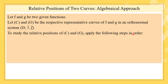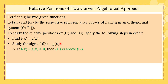First, we find F minus G of X. We are finding the relative positions of C and G, so we find F minus G of X, then we study the sign of F minus G of X. If F minus G of X is greater than 0, then we can say that C is above G. C is the representative curve of F, and G is the representative curve of G.